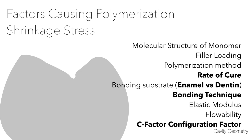Fast-setting materials generate more stresses than slow-set materials. Self-cure materials have slow settings, so there is time for molecules to arrange themselves according to flow. Light-cure materials should be cured using soft-start or pulse-mode curing. Bonding substrate is another important factor — composites tend to debond from dentine if the bond strength is less than 13 to 17 megapascals. Strength is highest in enamel, so most stresses are generated at the dentine-restoration interface.